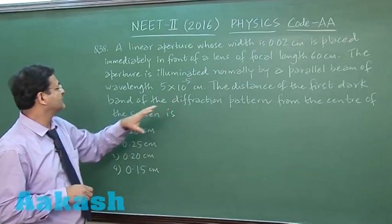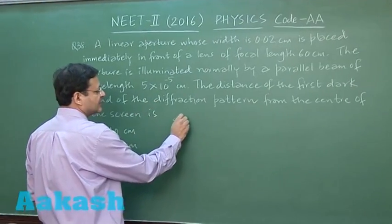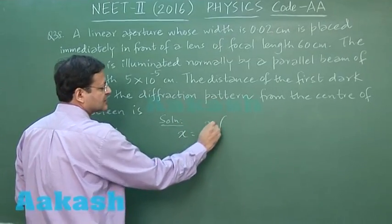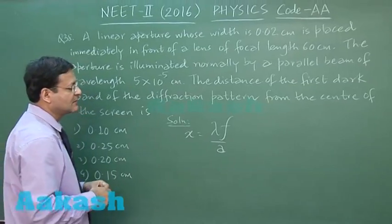Wavelength is given, so the distance of the first dark fringe you are supposed to calculate. This is a straightforward formula-based question. Position of the first dark fringe, I am using the expression lambda f by aperture, so you have to substitute the values here.